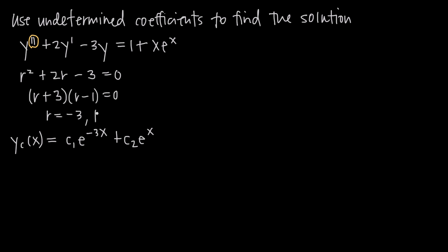If we have equal real roots or complex conjugate roots, we use a different formula for the complementary solution. This is the one we use when we have distinct real roots — two roots that are both real numbers and different from one another.